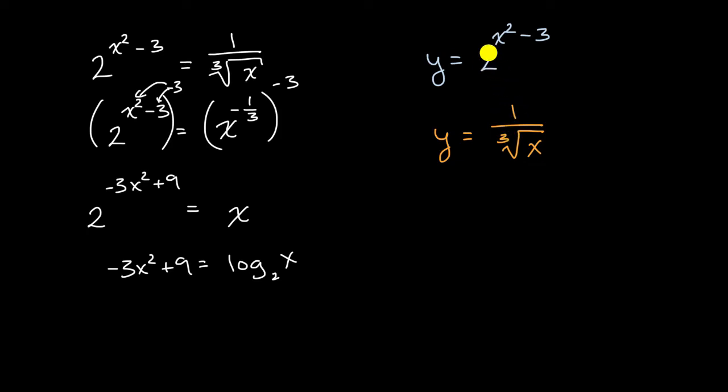Because where they intersect, that means two to the x squared minus three is giving you the same y as one over the cube root of x. Or another way to think about it is they're going to intersect at an x value where these two expressions are equal to each other.